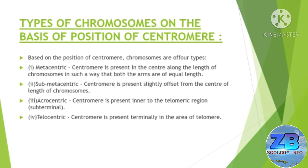The second one is submetacentric: the centromere is present slightly offset from the center of the length of the chromosome. The third one is acrocentric: the centromere is present close to the telomeric region, in the subterminal region. The fourth one is telocentric: the centromere is present terminally, in the area of the telomere.